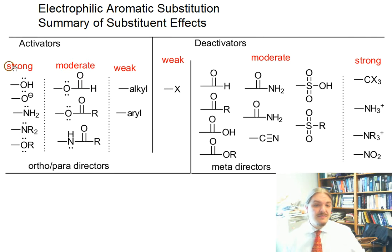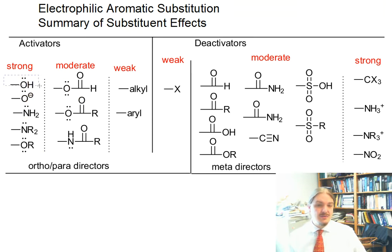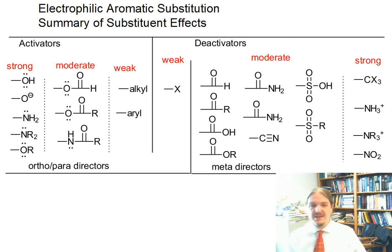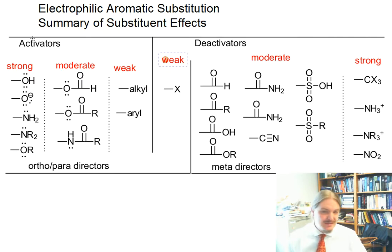The strong activators — and again, all activators are ortho-para directors — are those things that can donate electron density through resonance. These are your oxygen and nitrogen compounds or groups: phenol, aniline, and ethers. They have lone pairs and are electronegative, so they withdraw electron density a little bit by induction, but resonance wins.